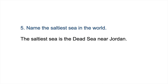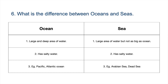Name the saltiest sea in the world. The saltiest sea is the Dead Sea, near Jordan. What is the difference between oceans and seas? An ocean is a large and deep area of water, while a sea is a large area of water but not as big as the ocean. Both have salty water. Examples of oceans are the Pacific and Atlantic. Examples of seas are the Arabian Sea, Dead Sea and Red Sea.